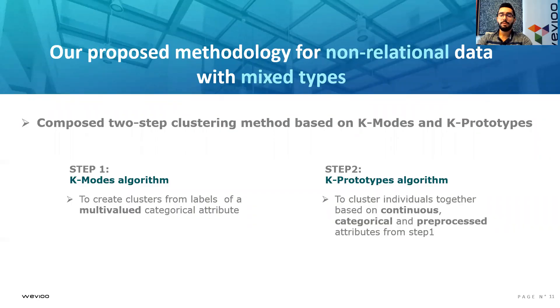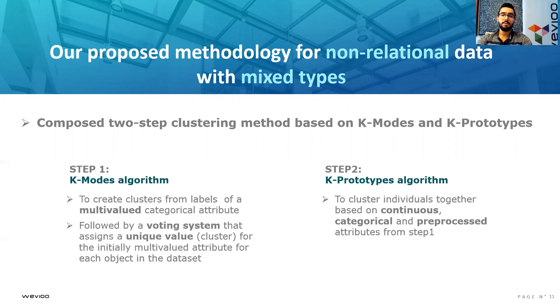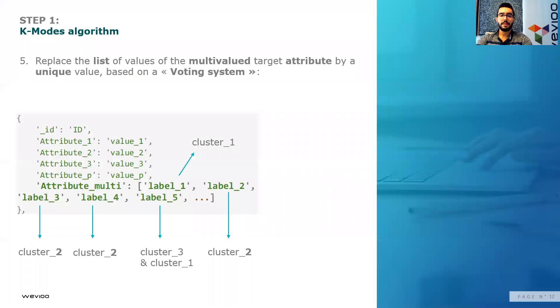Before moving on, I'd like to remind you of the process of step one, which is to create clusters from labels of multivalued categorical attribute. Then the sub-step two, which is to implement a voting system that is able to assign unique value instead of a list of values for a certain multivalued key. So how is this done?